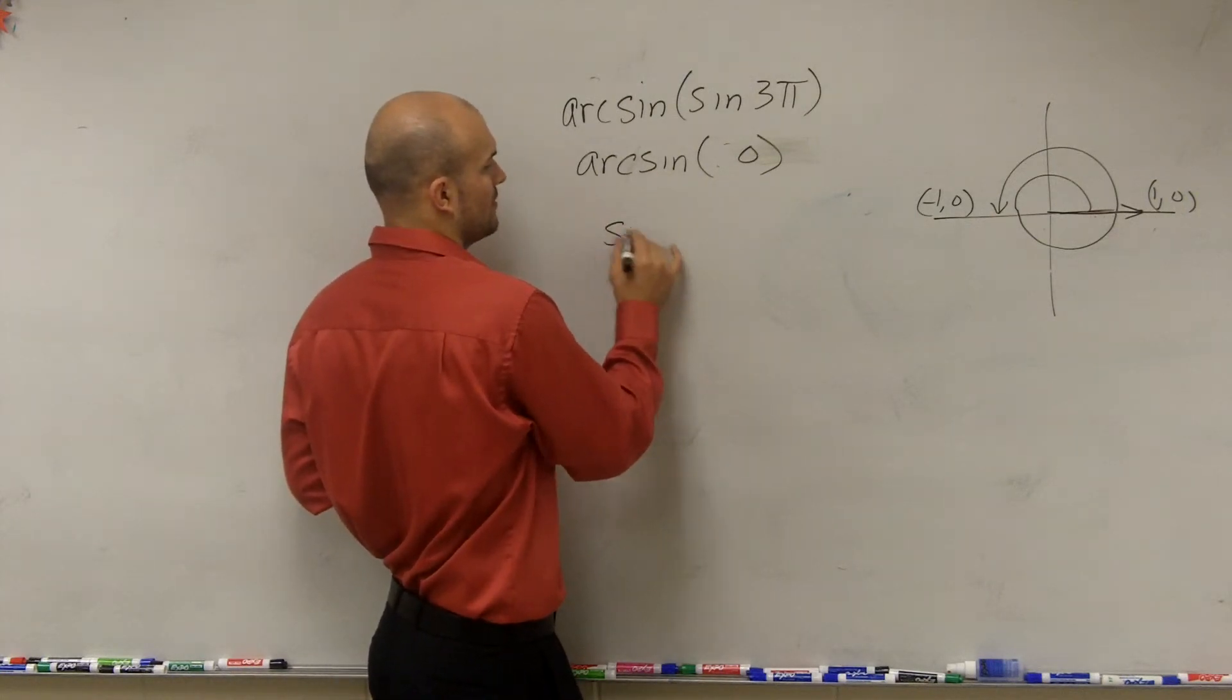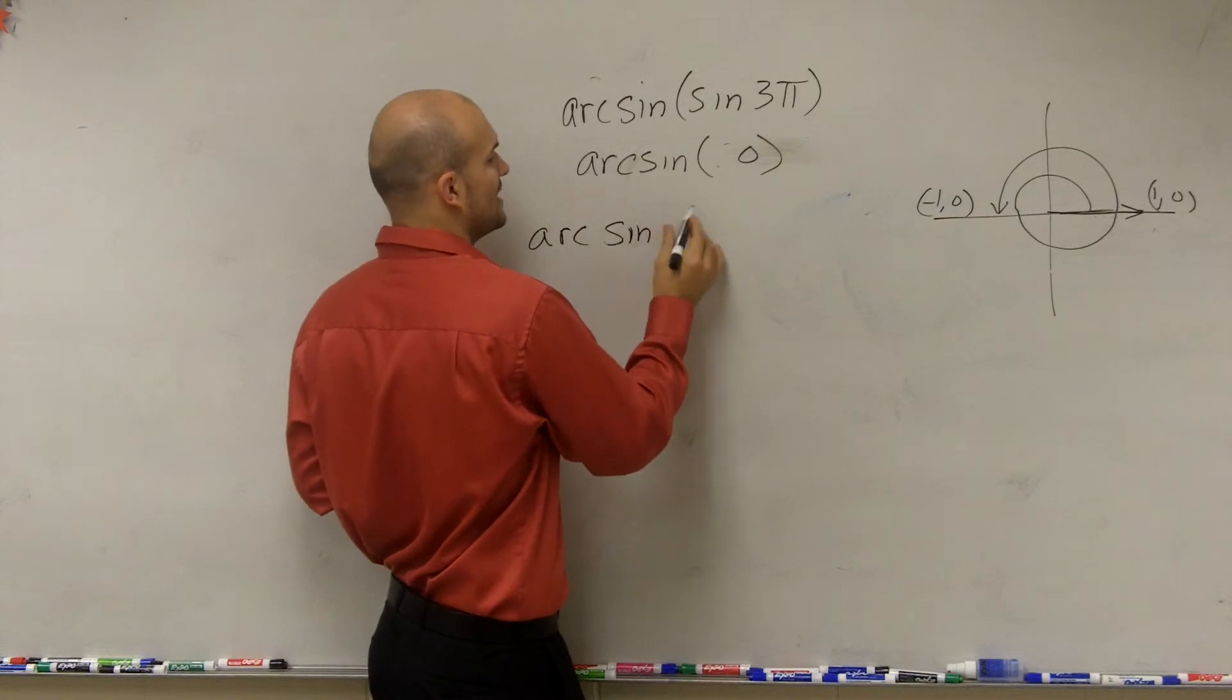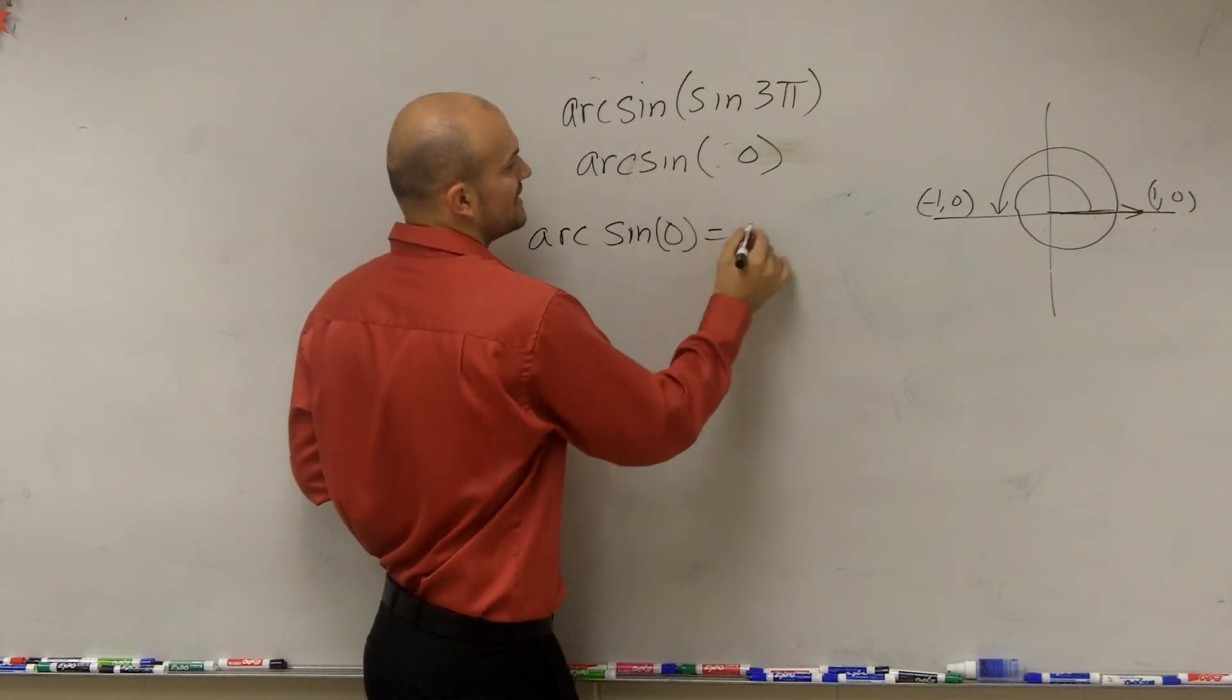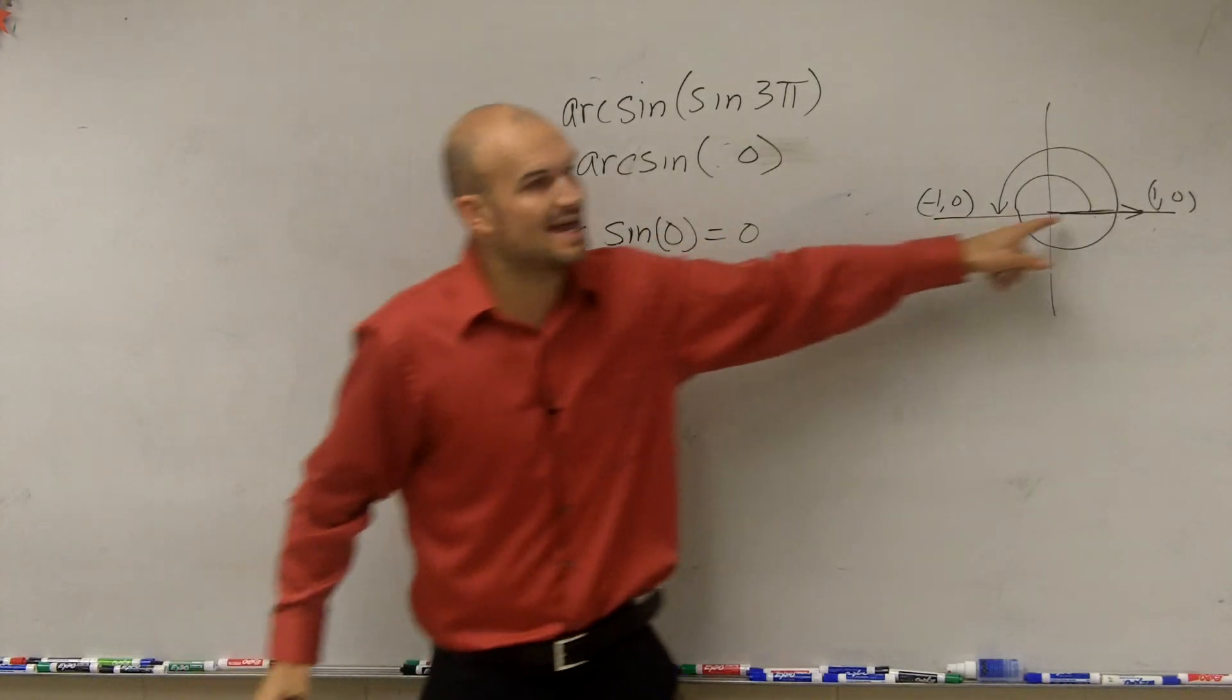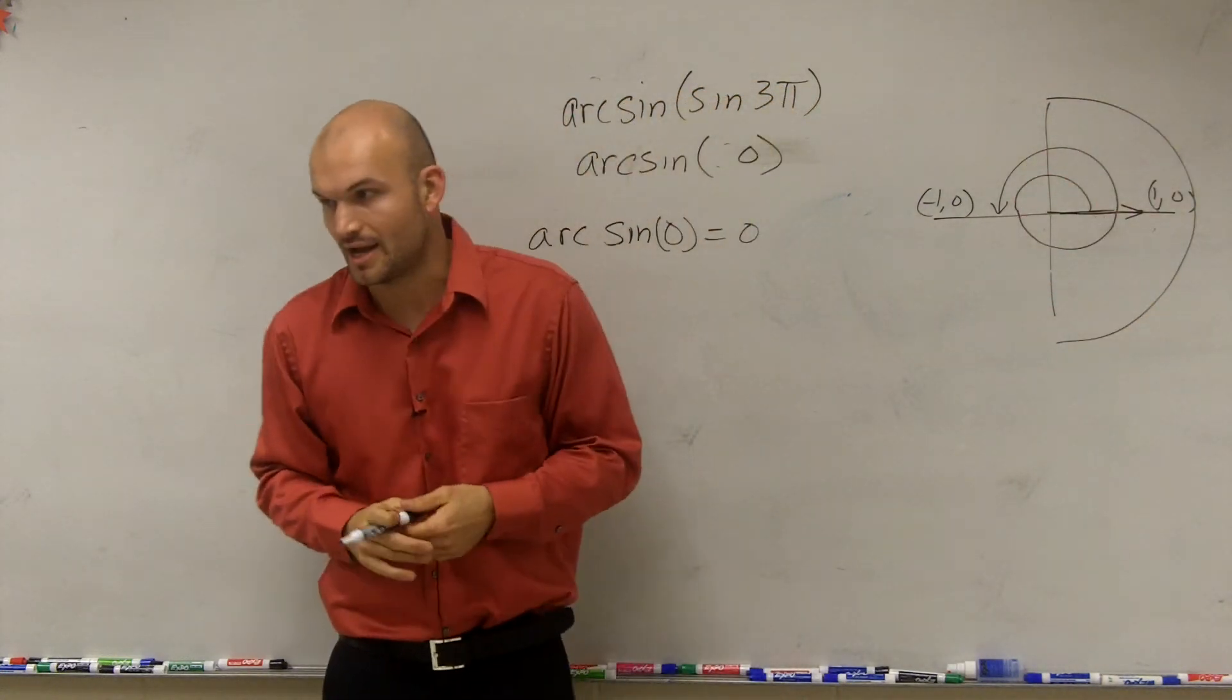So therefore, the arc sine of 0 is going to equal 0. Because if we had the angle 0, that's within your range of negative π-halves to π-halves.